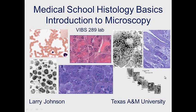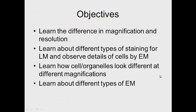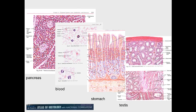Hi, I'm Larry Johnson, I'm a professor at Texas A&M University. Today we're going to talk about microscopy - differences in magnification and resolution, different types of staining at the light microscopic level, how cell organelles look at different magnifications at the electron microscopic level, and differences in types of electron microscopic images.